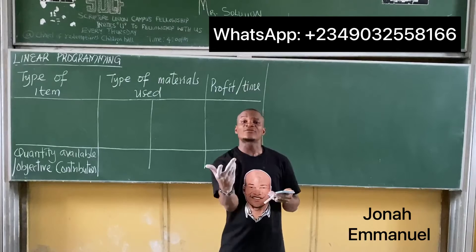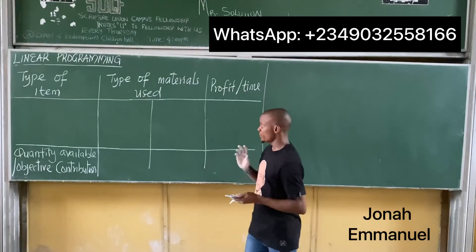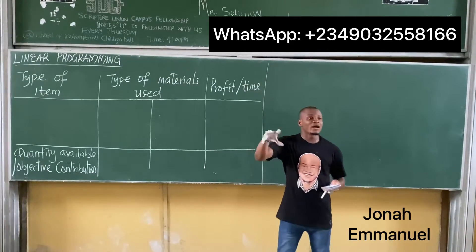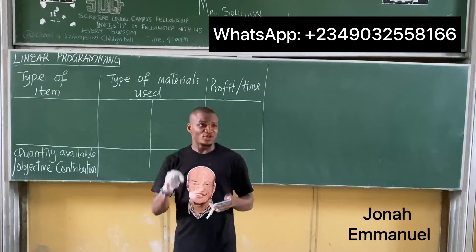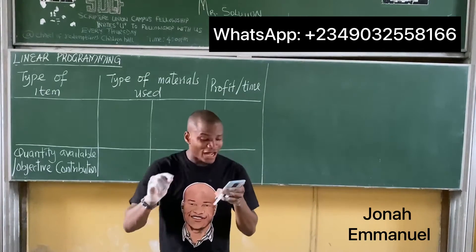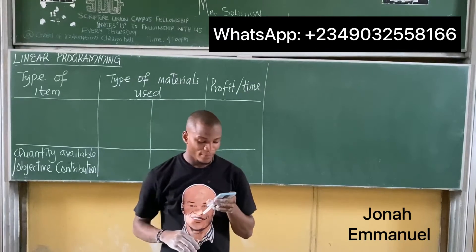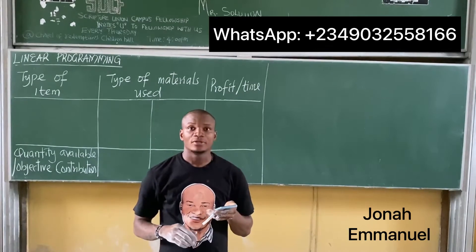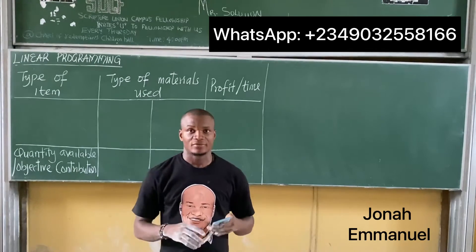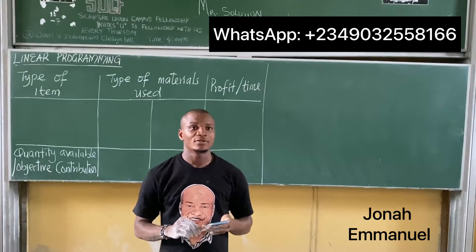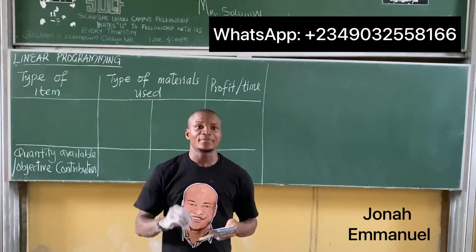In some problems on linear programming where the table is not given, look out for the following. Number one: the type of item given.